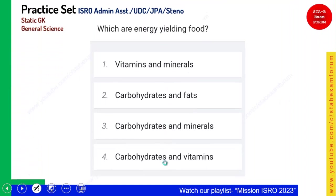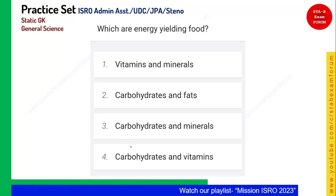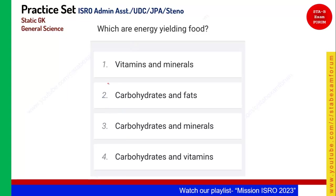Energy-yielding foods are what? Whenever you eat sugar, that is carbohydrates. So the option should include carbohydrates. Minerals and vitamins are needed in very minute quantities and they do not provide energy. Option 2, carbohydrates and fat, is the correct answer.